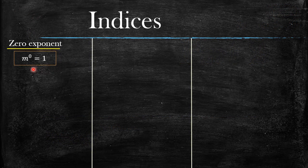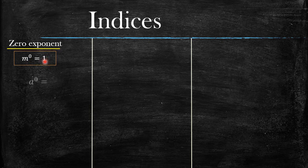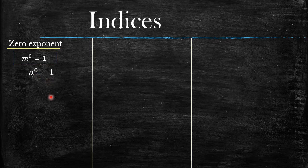The zero exponent law states that anything raised to the power zero equals one. So let's look at some examples. How about a raised to the power zero? It's also equal to one. What if it's not a letter but a number, like 5 raised to the power zero? It's also equal to one.